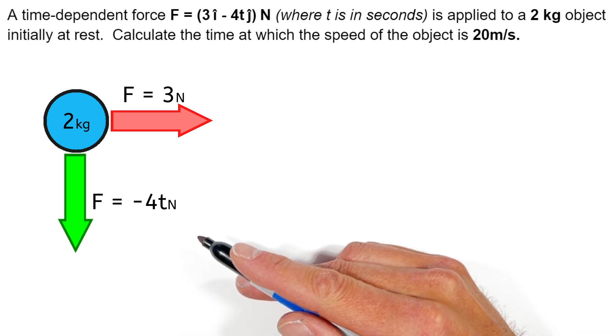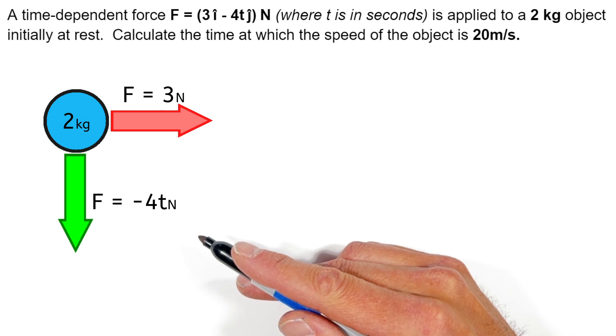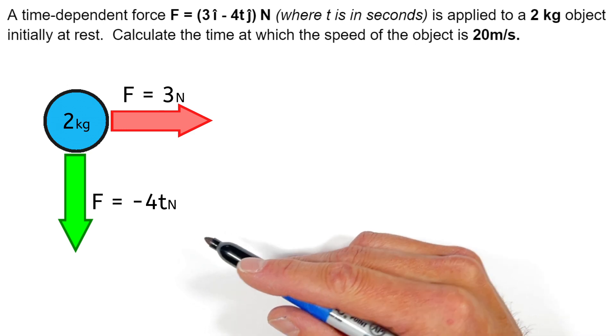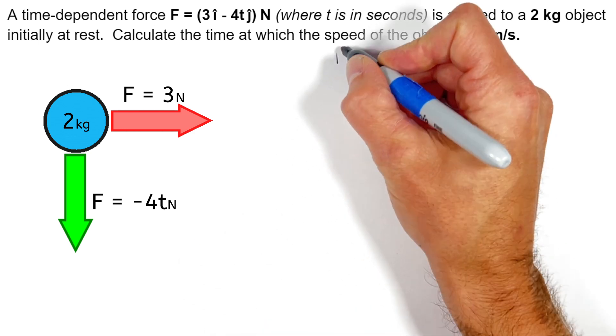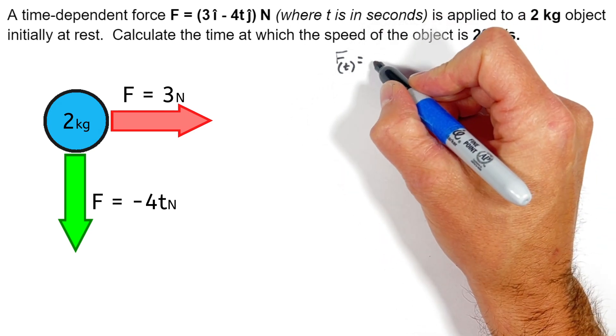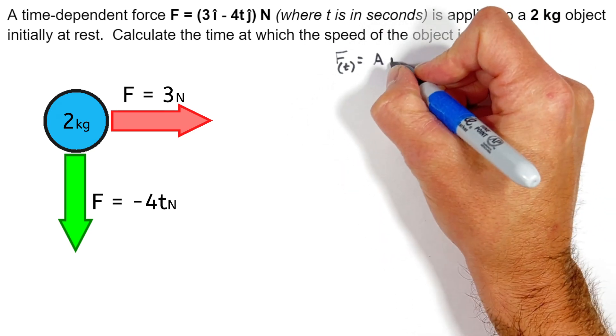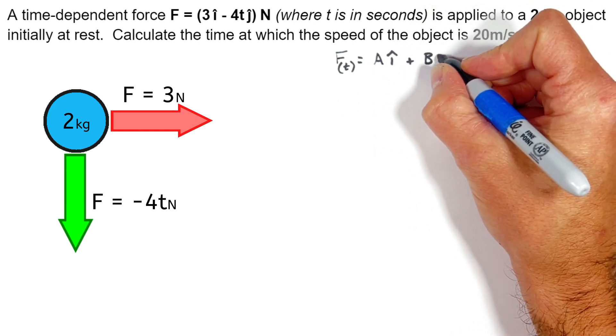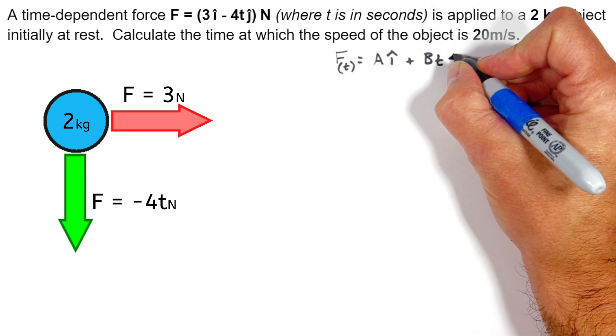Now today I'm going to work this problem out using variables rather than numbers, so that you can apply this solution to whatever problem it is you're trying to solve on your own. So I'm going to say our force as a function of time is equal to, not 3, but a in the i direction, plus bt in the j direction.